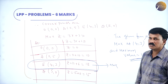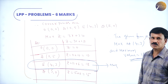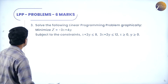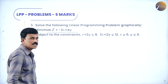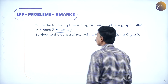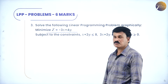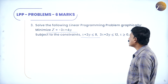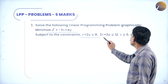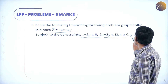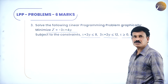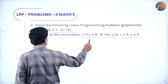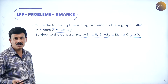Now let us come to the next problem: solve the following linear programming problem graphically — minimize z = -3x + 4y, subject to the constraints x + 2y ≤ 8, 3x + 2y ≤ 12, and non-negative restrictions x ≥ 0, y ≥ 0. There are two inequalities; let us convert them into equalities.